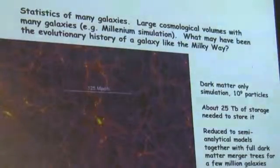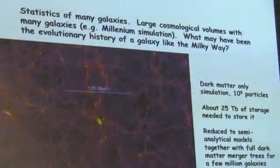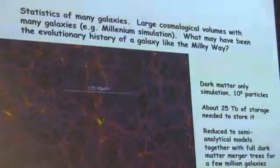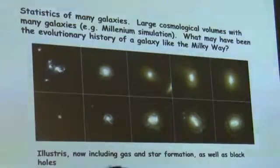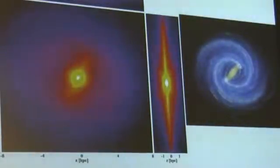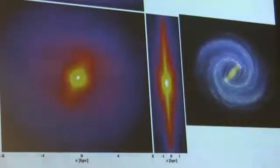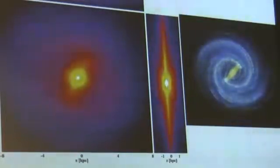Simulations in galaxy formation span a large range. In one instance, there are simulations now approaching 10^11 particles. This is an example of a purely dark matter simulation — the so-called Millennium simulation, the latest version of which is approaching 10^11. A big one that people talk about a lot now is the Illustris simulation, with large numbers of particles and many, many galaxies. I'm going to focus on simulations where I'm interested in forming a single galaxy — in particular, a galaxy like the Milky Way — because we don't have many simulations that match the properties of the Milky Way.